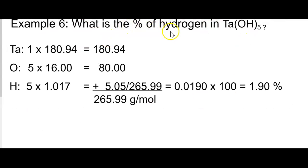Similarly here, what is the percent of hydrogen in Ta(OH)5? Again, you'd have to still get the grand total, the molar mass, and then you can take the part that represents the element they're asking for, part over whole times 100, and get your percent.